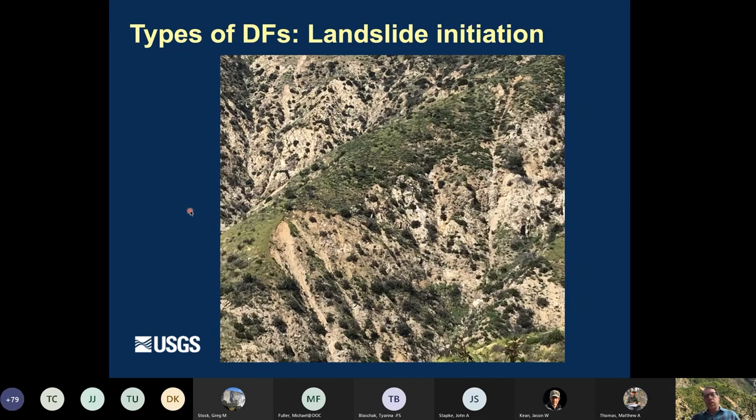One of the things I want to just make a distinction on about debris flows early on is there's a couple different types of initiation. So some debris flows start when shallow landslides then fluidize and move downstream. And so, for example, in this photo, I've outlined a few shallow landslides and then you can see their travel paths. So the shallow landslides begin and then it becomes a debris flow as it moves downstream.